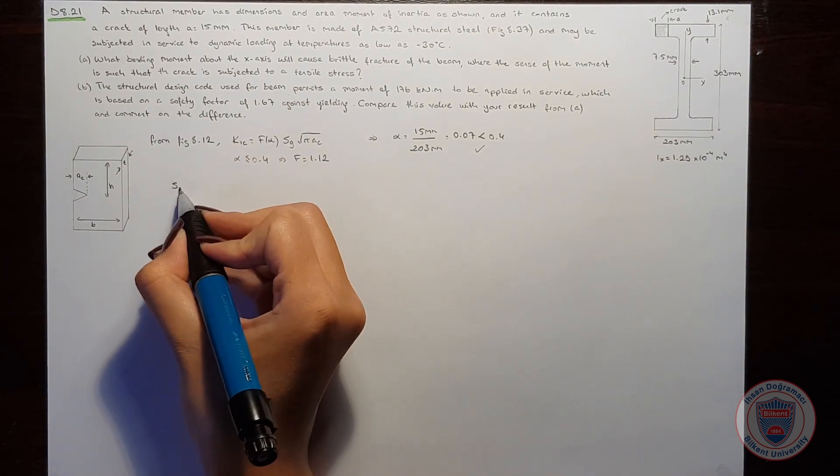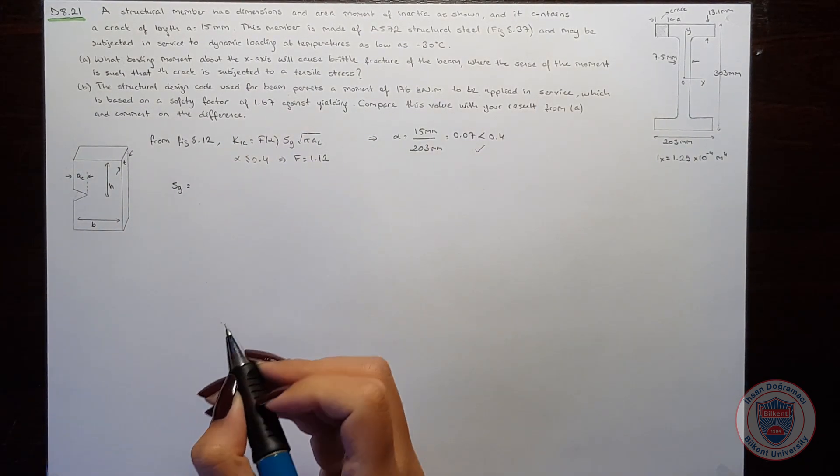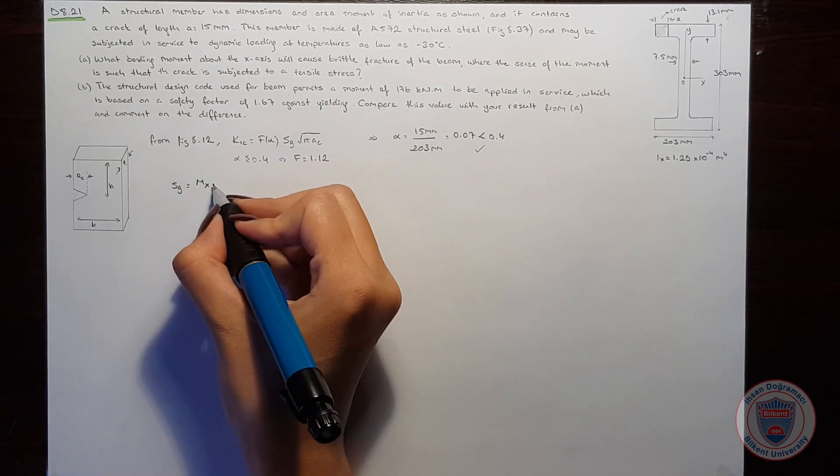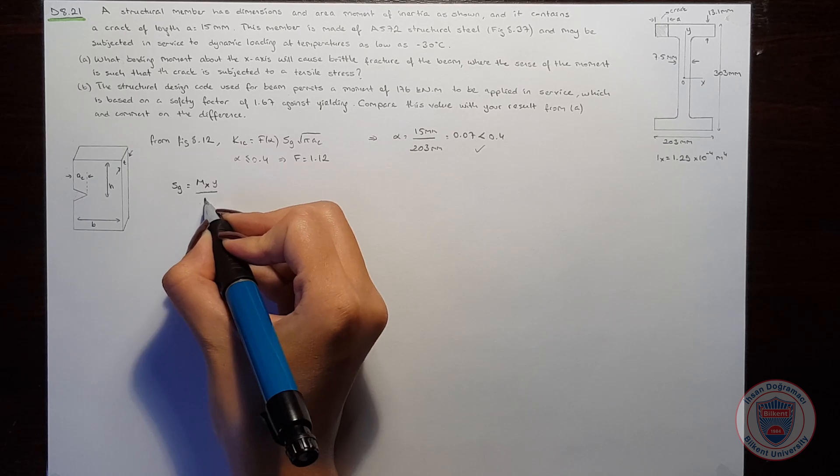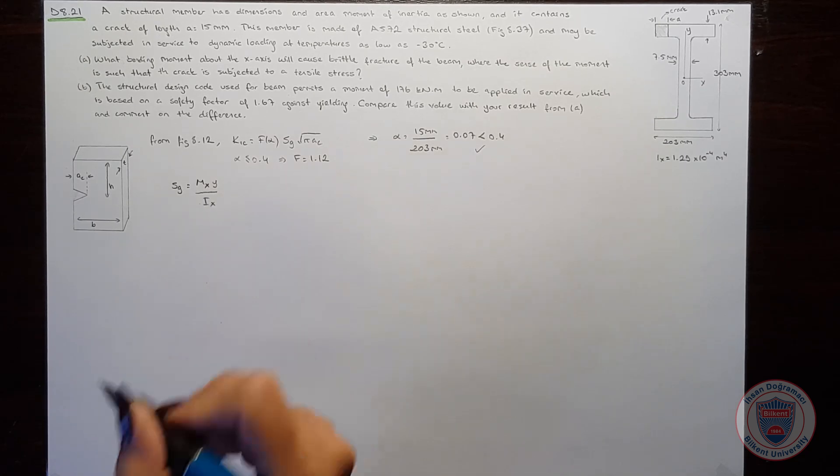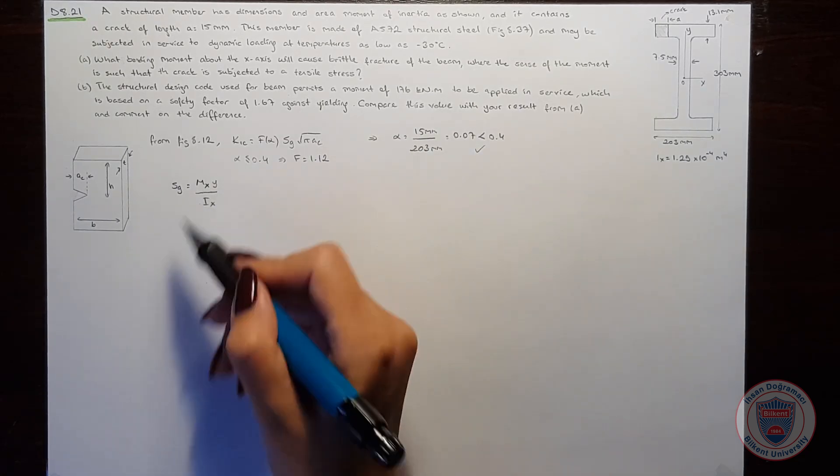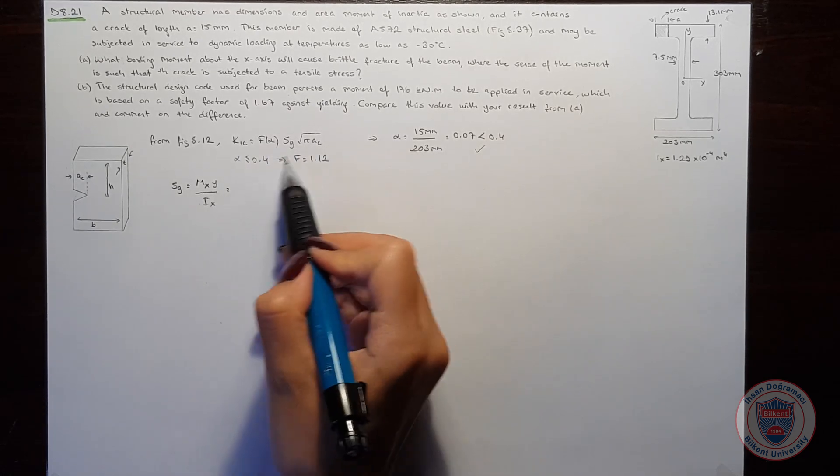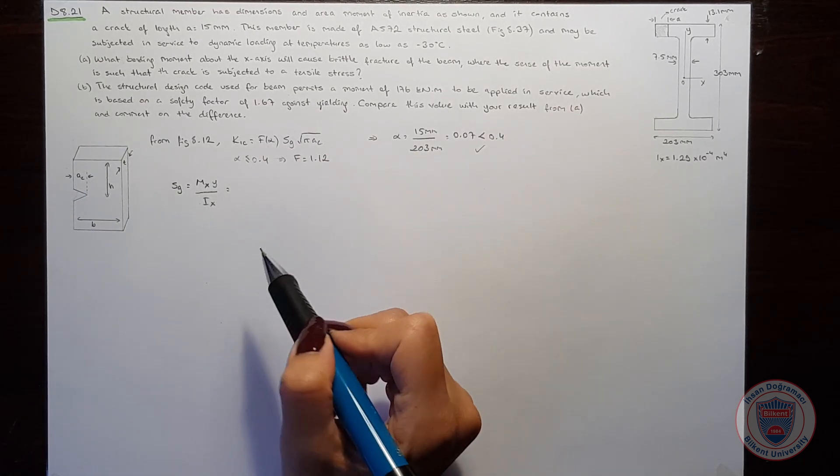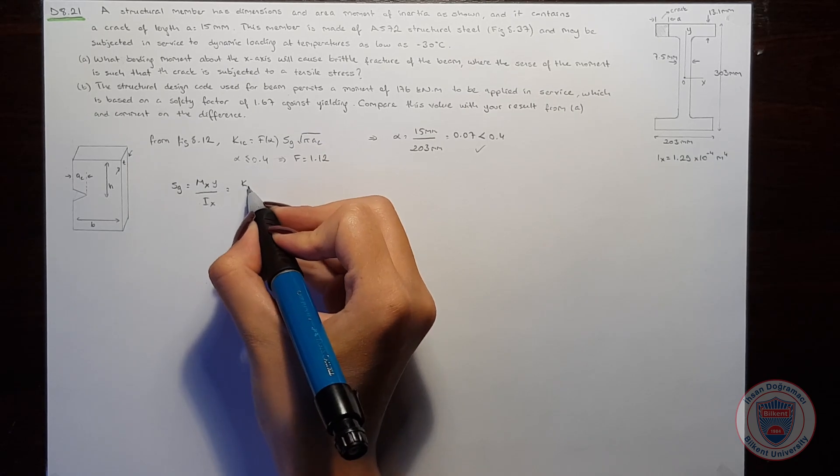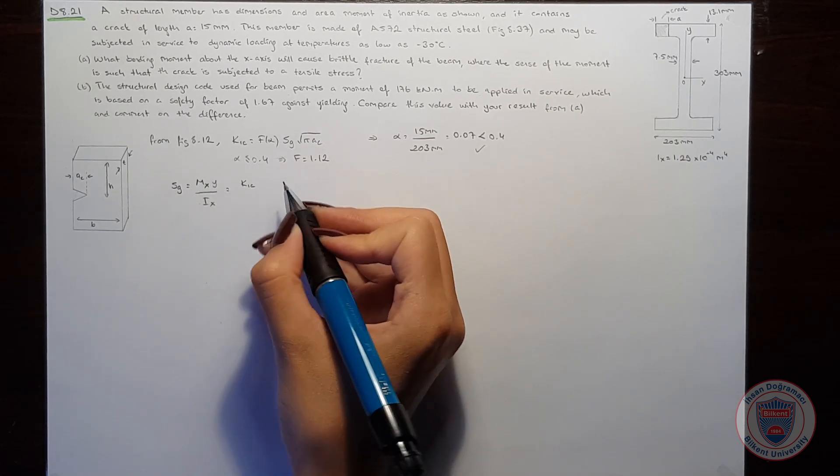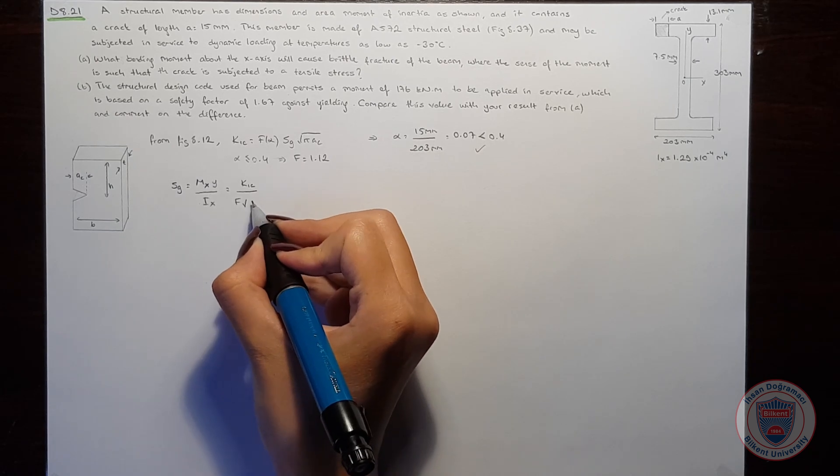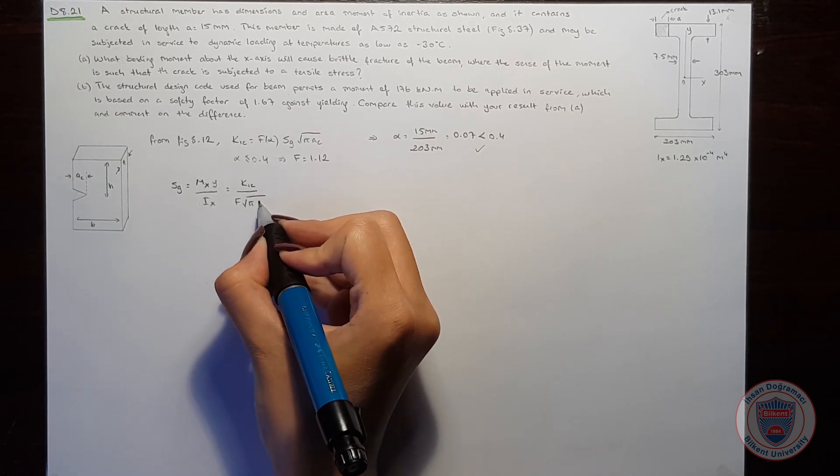Furthermore, we know that Sg will be equal to moment about the x-axis times y over Ix, which is the moment of inertia. And from this equation, we can also say that Sg is equal to stress intensity factor over form factor square root of pi times ac.